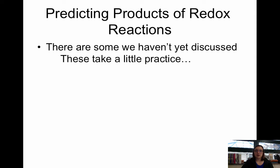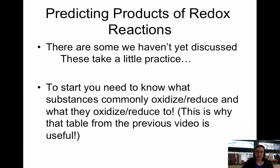As we look at predicting products of redox, there are some equations that we haven't yet discussed, and these take a little bit of practice. You're going to have to become very familiar with these specific reactions. To start, you need to know what substances are commonly oxidized or reduced and what they're reduced to. This is why the table from the previous video that said these are the common oxidants, these are the common reductants, that table is now going to come into play. It's going to be very useful.